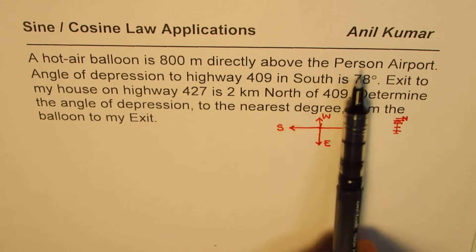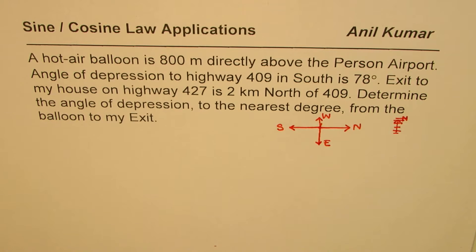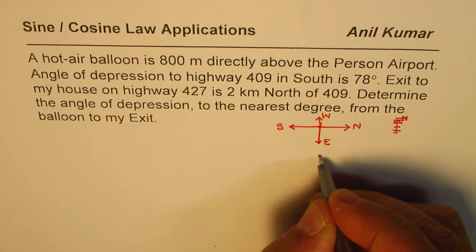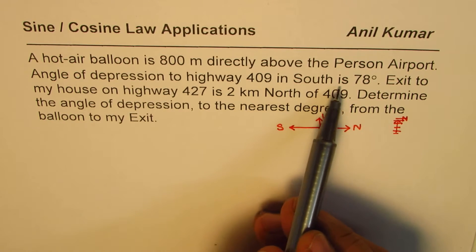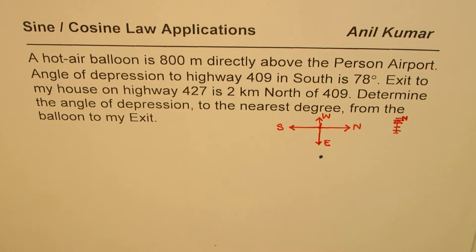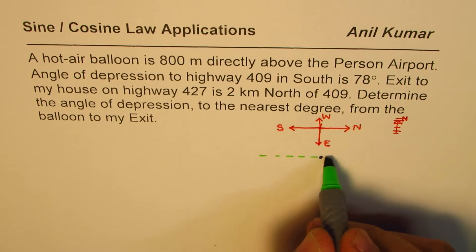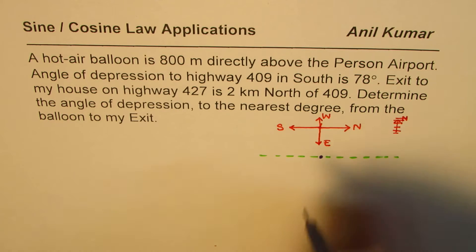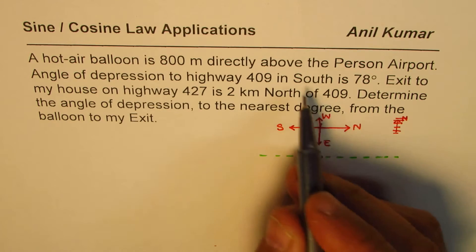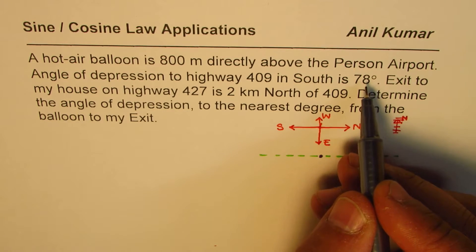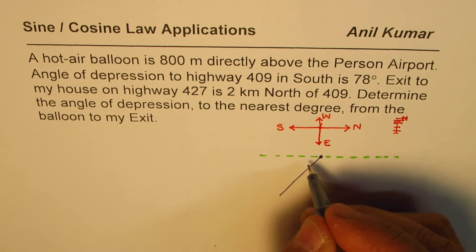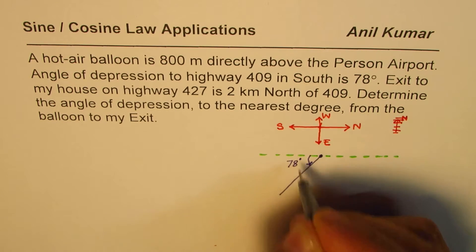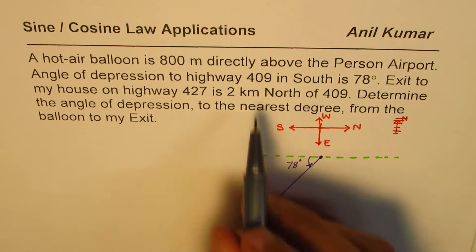A hot air balloon is 800 meters directly above Pearson Airport, so let us say the position of the balloon is here. The angle of depression to highway 409 in the south is 78 degrees. When we want to make the angle of depression, we draw a horizontal line, and the angle of depression is always measured from the horizontal. So from this point towards south — south is towards the left for me — 78 degrees. So this angle is 78 degrees, and that is towards highway 409.